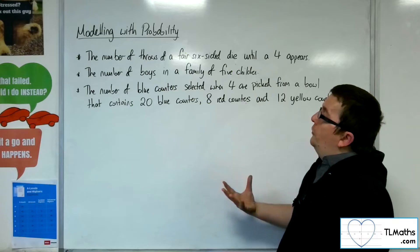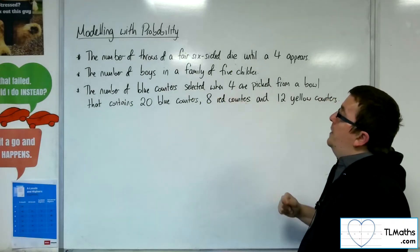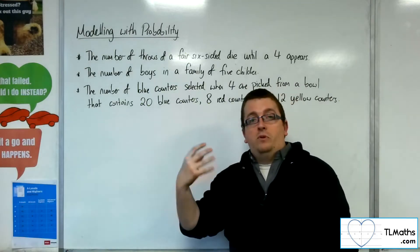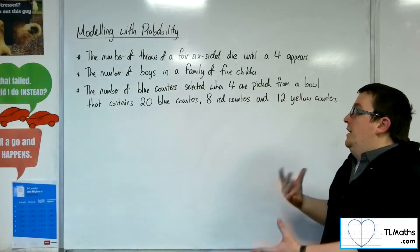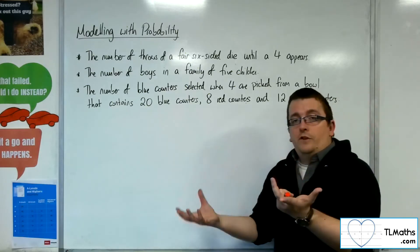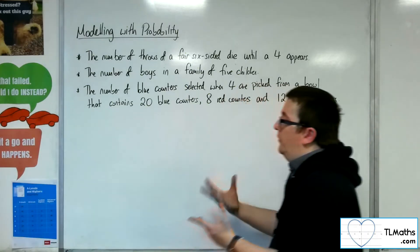So you could just as well say the number of girls in a family of five children and the probability of success will be the probability of getting a girl. You could have it either way. So yes, we have those two options, success and failure.